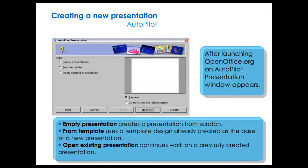After launching OpenOffice.org, the auto-pilot presentation window appears. Empty Presentation creates a presentation from scratch. From Template uses a template design already created as the base of a new presentation. Open Existing Presentation continues work on a previously created presentation. Now, click on the empty presentation and click Next to continue.